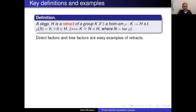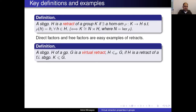Basic examples are of course direct factors. If you have a direct product decomposition, then each of the factors is a retract — it's just a special case of a semi-direct product. But also free factors: if you have a free product of two groups, then each factor is also a retract; you just kill the other factor.